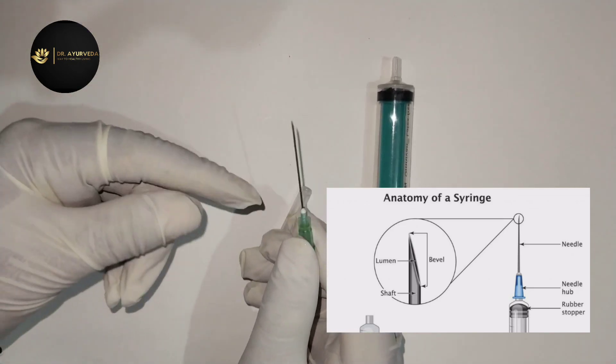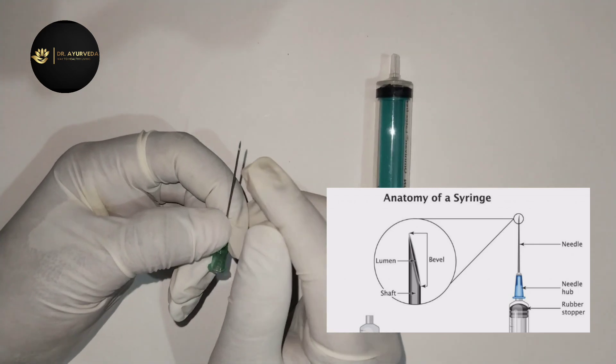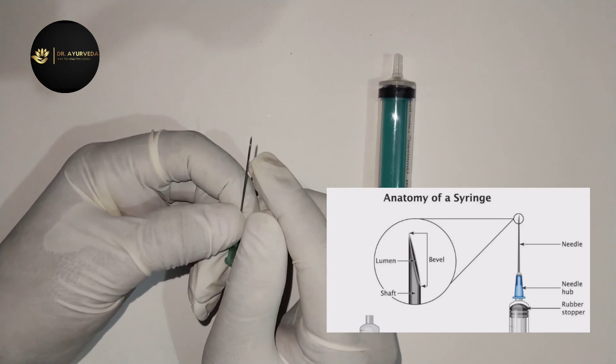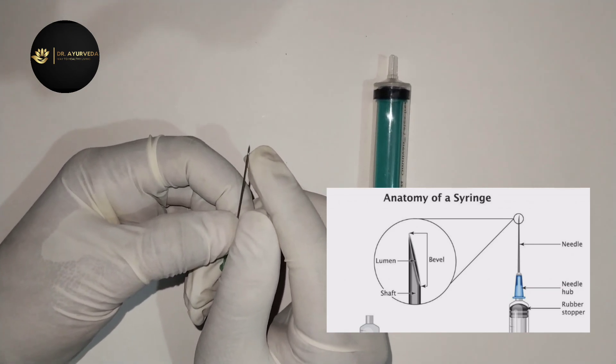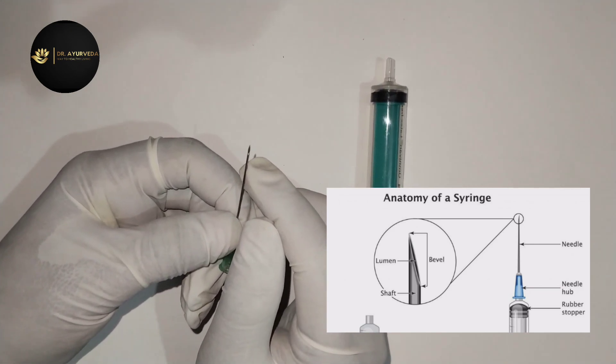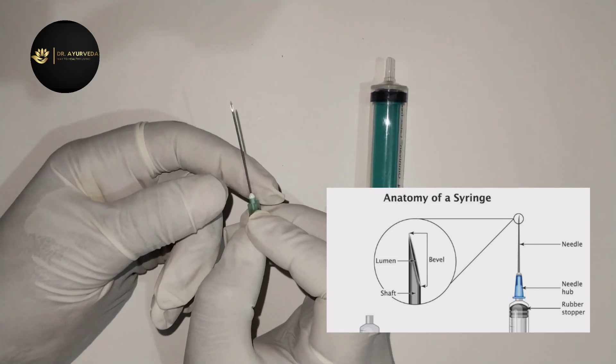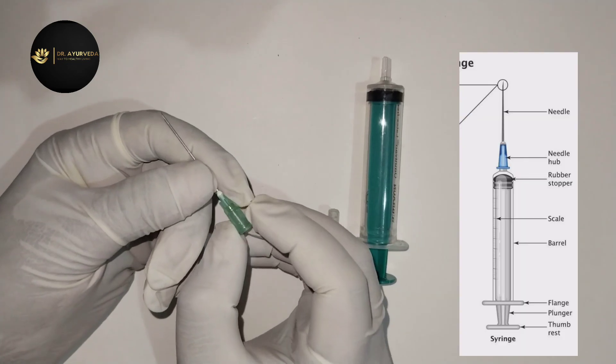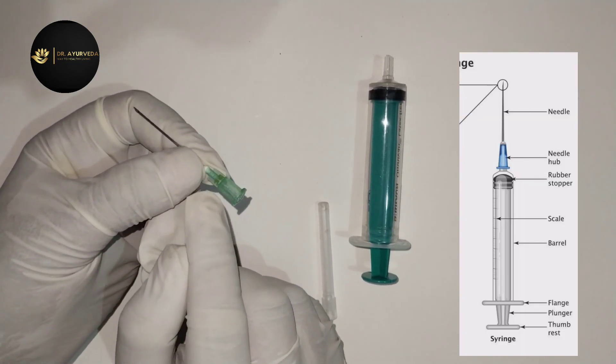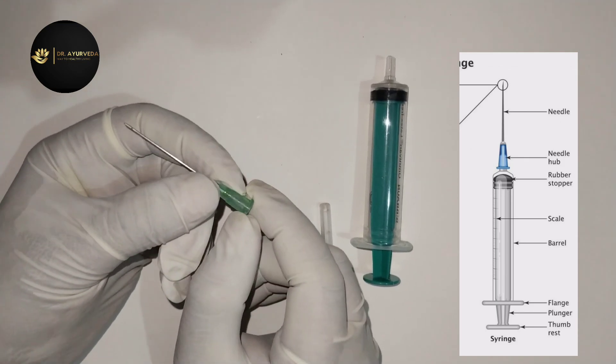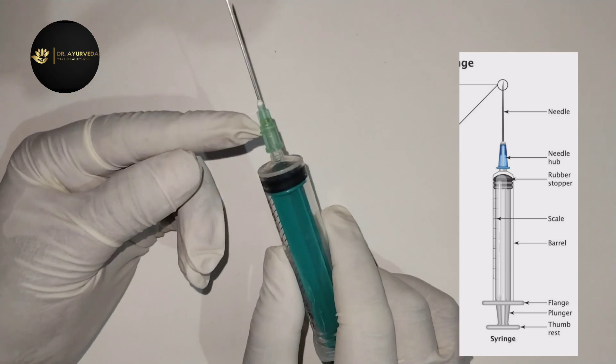Then we have the shaft. Below the cap here is the shaft, here is the bevel, and here is the needle hub.